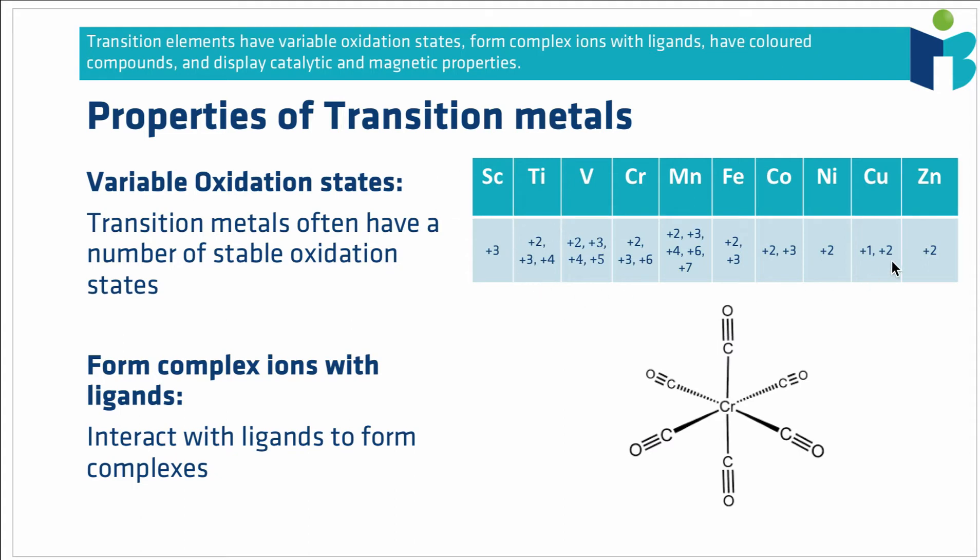However, most of these elements, these transition metals, have a number of different oxidation states that they are stable in. For example, vanadium you can find it in compounds with a plus 2, plus 3, plus 4 or plus 5 oxidation state.